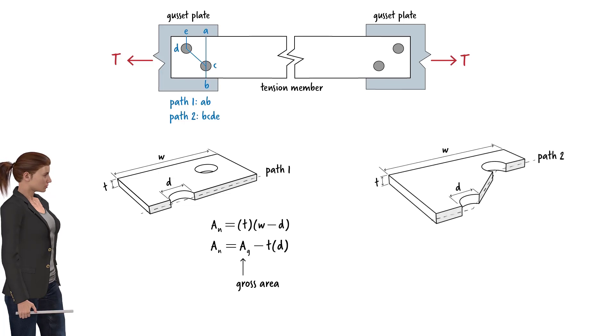Here is the three-dimensional view of the cut plate along path 2. To determine the net area along this path, we need to know the center-to-center distances between the holes. Let's label this distance s and use g to denote this distance.